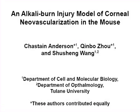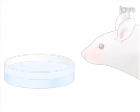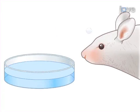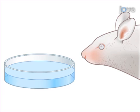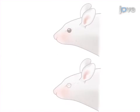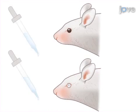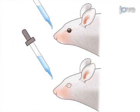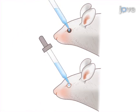The overall goal of the experiment is to observe the effect of anti-angiogenic therapy in a mouse model of corneal neovascularization. This is achieved by briefly applying a one molar solution of sodium hydroxide to the mouse eye to induce a controlled level of corneal neovascularization. As a second step, the anti-angiogenic compound is administered daily, which inhibits the growth of new vessels into the injured cornea.